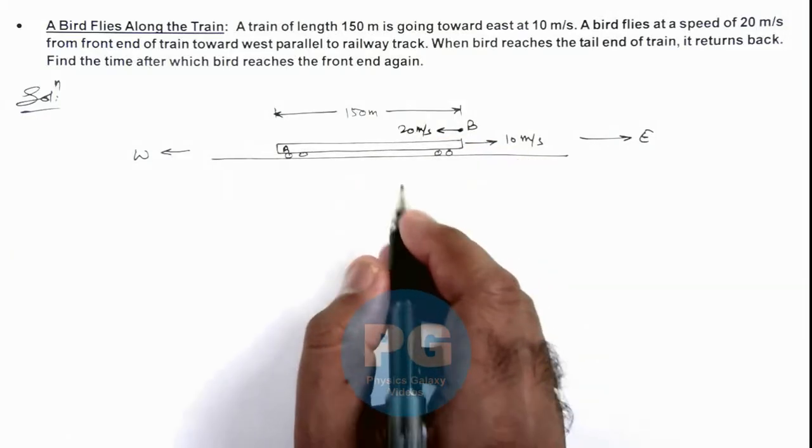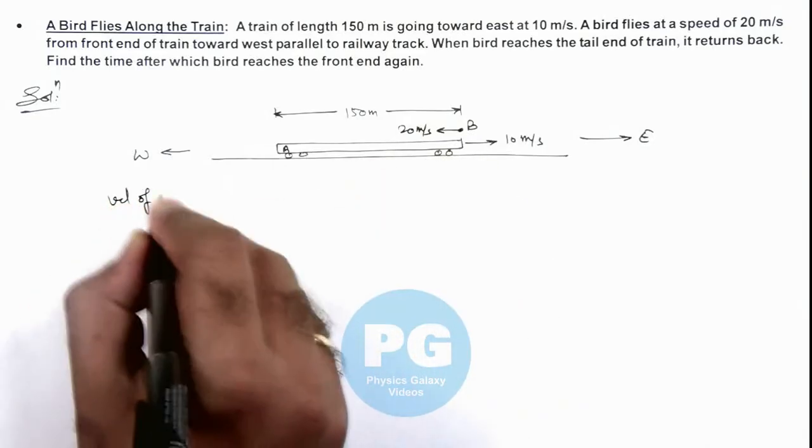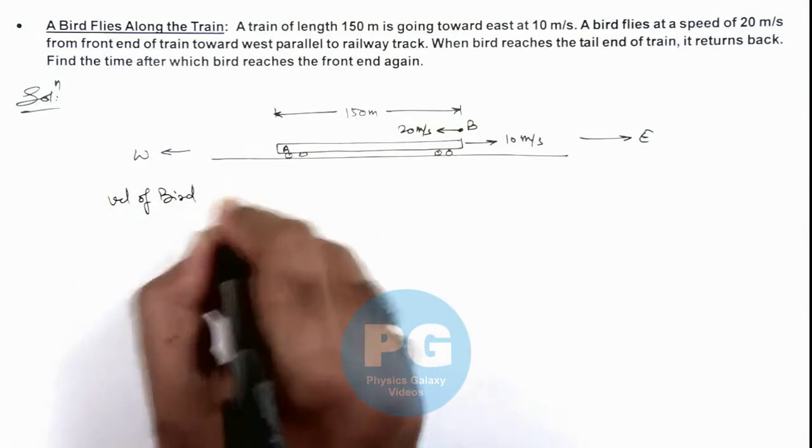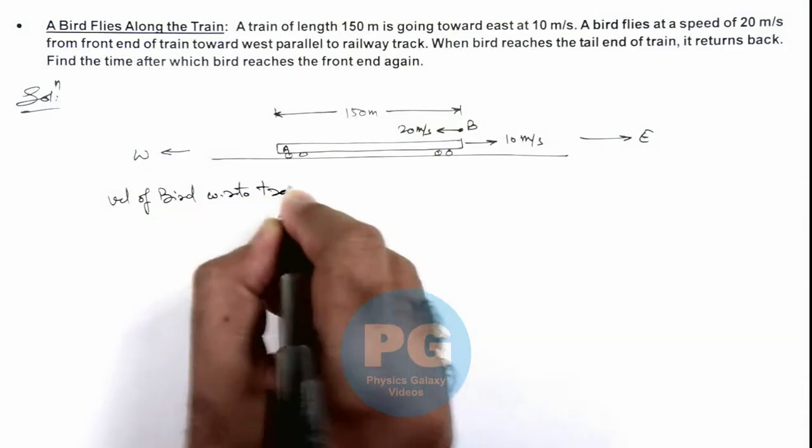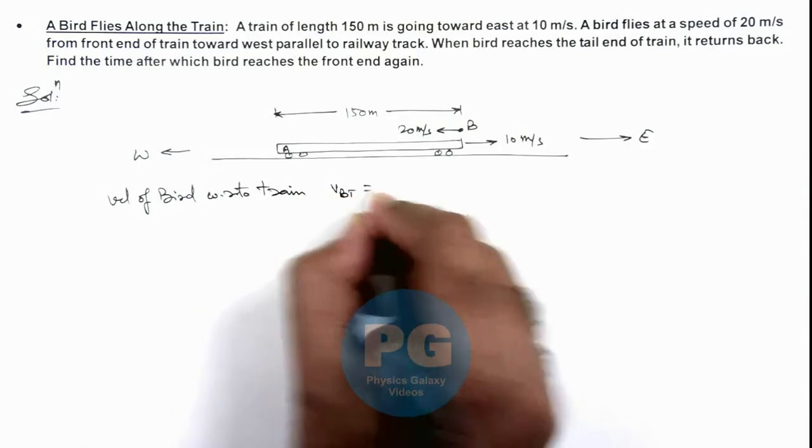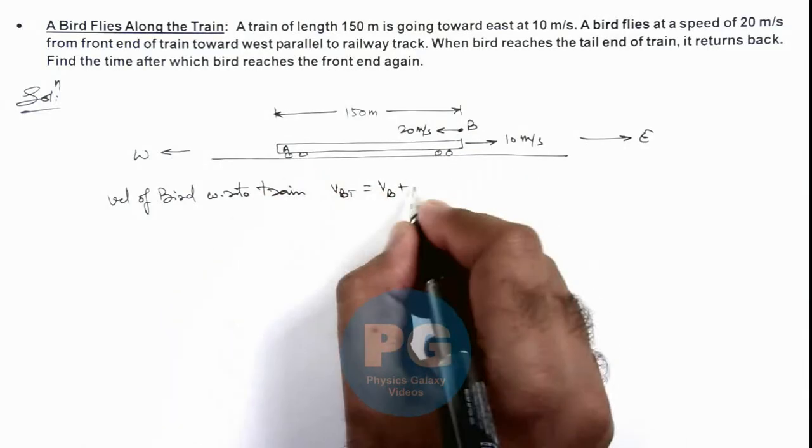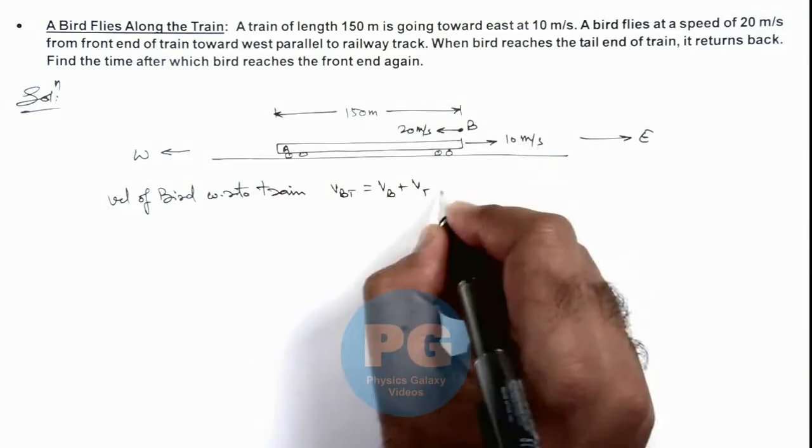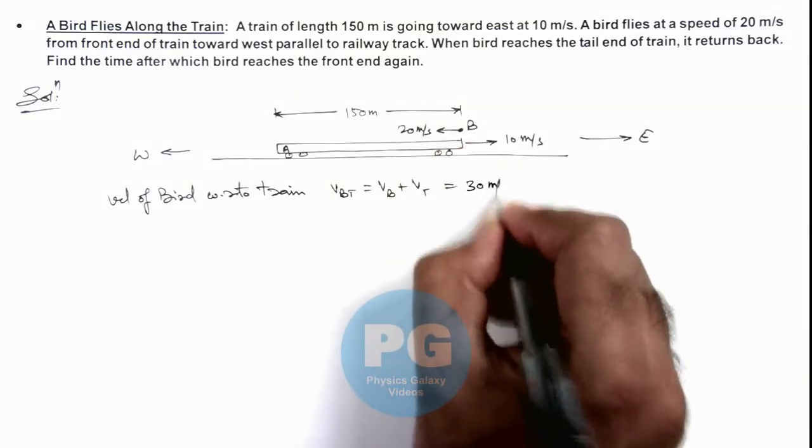As it is traveling in the opposite direction, here we can calculate the velocity of bird with respect to train. That is, velocity of B with respect to T is VB plus velocity of train, that is 10 meters per second plus 20, so we can write it as 30 meters per second in magnitude.